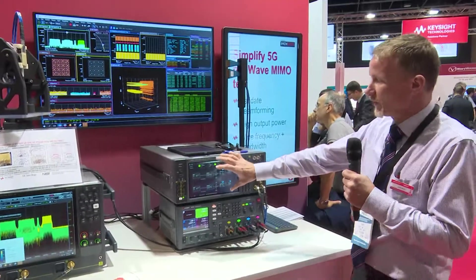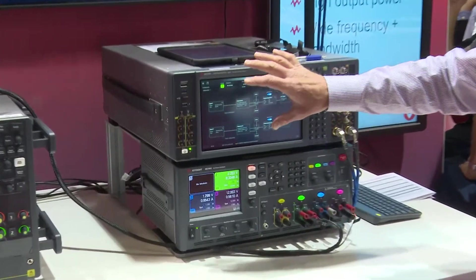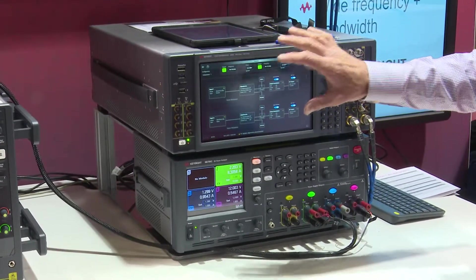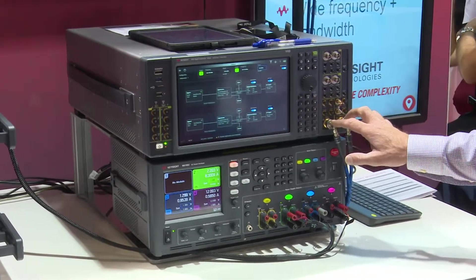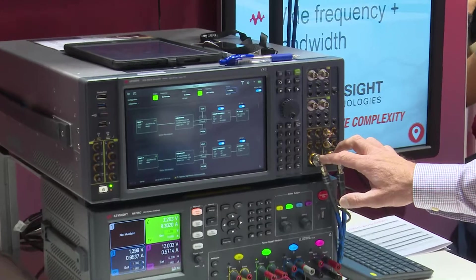So I'll start over here with our vector signal generator. This is the VXG, our newest vector microwave signal generator. It has two channels, both channels go to 44 gigahertz, perfect for the new 5G bands.